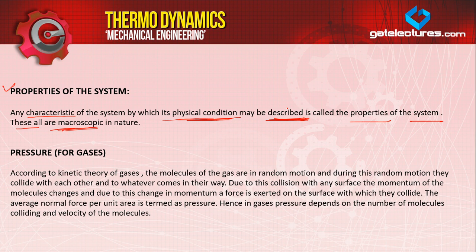If we want to define the state of any system — at what position it is — if I change any property, then the state of the system changes. So any characteristics of the system by which its physical condition may be described is called the properties of the system, and these all are macroscopic in nature.